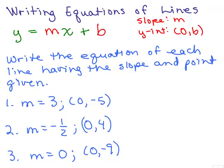Here's a problem. Write the equation of each line having the slope and point given. Look at number one: m equals 3 and I'm giving the point (0, -5). Notice that the x-coordinate is 0, so actually this is the y-intercept, so we know that b is negative 5. Since I know m and b, I can directly substitute that in: y equals 3x minus 5.